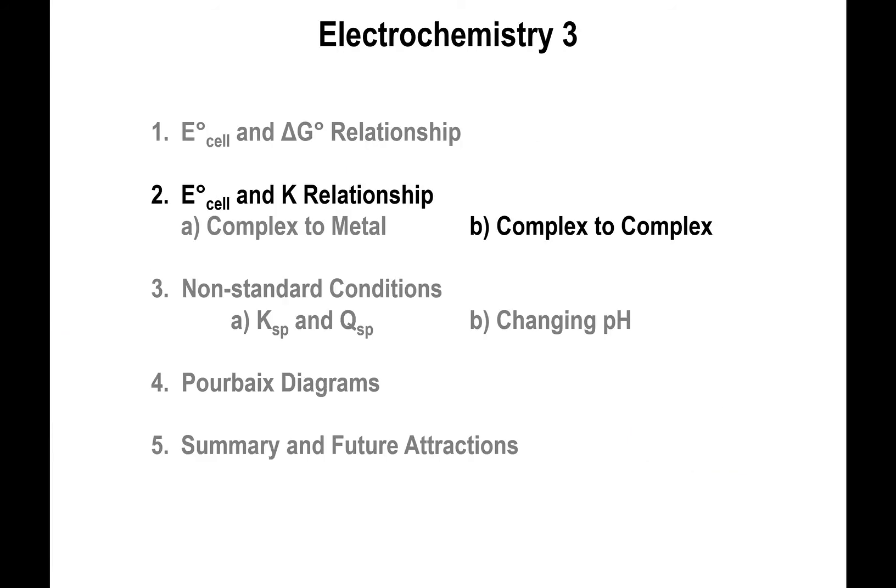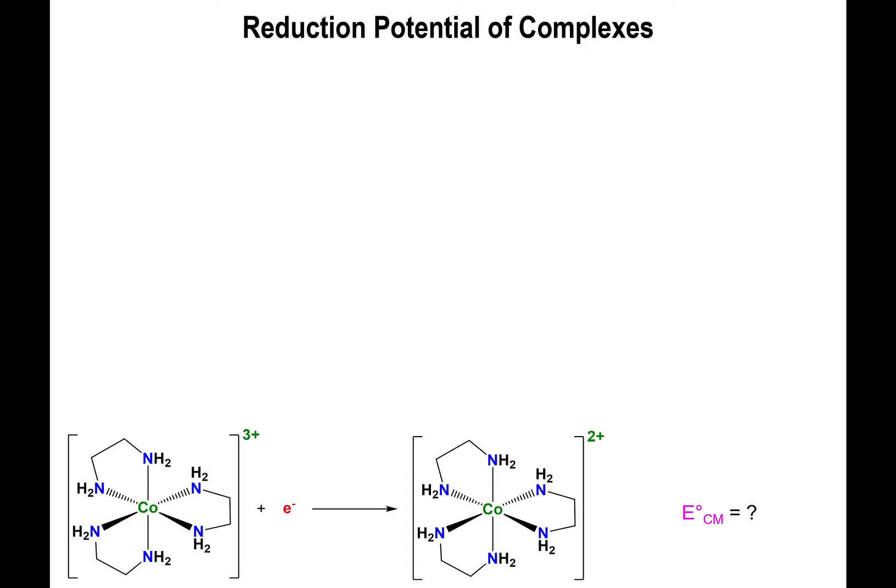Now that's if you're going from the complex to the naked neutral metal. But what happens if you have a plain reduction of one complex yielding a new complex? For instance, what if we have the cobalt 3+ complex, the tris-ethylenediamine cobalt 3+ complex acquiring an electron and yielding tris-ethylenediamine cobalt 2+?